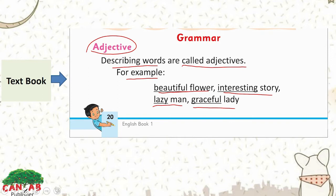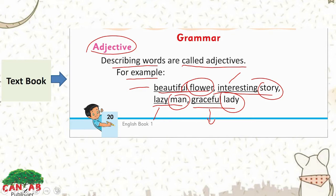As you can see, we have four nouns here: the flower, the story, the lady, the man. A noun names a person, place, thing, or idea. The words beautiful, interesting, lazy, and graceful are describing words which are describing those nouns. The word beautiful tells us the flower is beautiful; interesting tells us the story is interesting; lazy describes that the man is lazy — the quality can be both bad and good. Graceful tells us about the lady. So adjectives or describing words tell you more about the noun — its color, size, smell, etc.